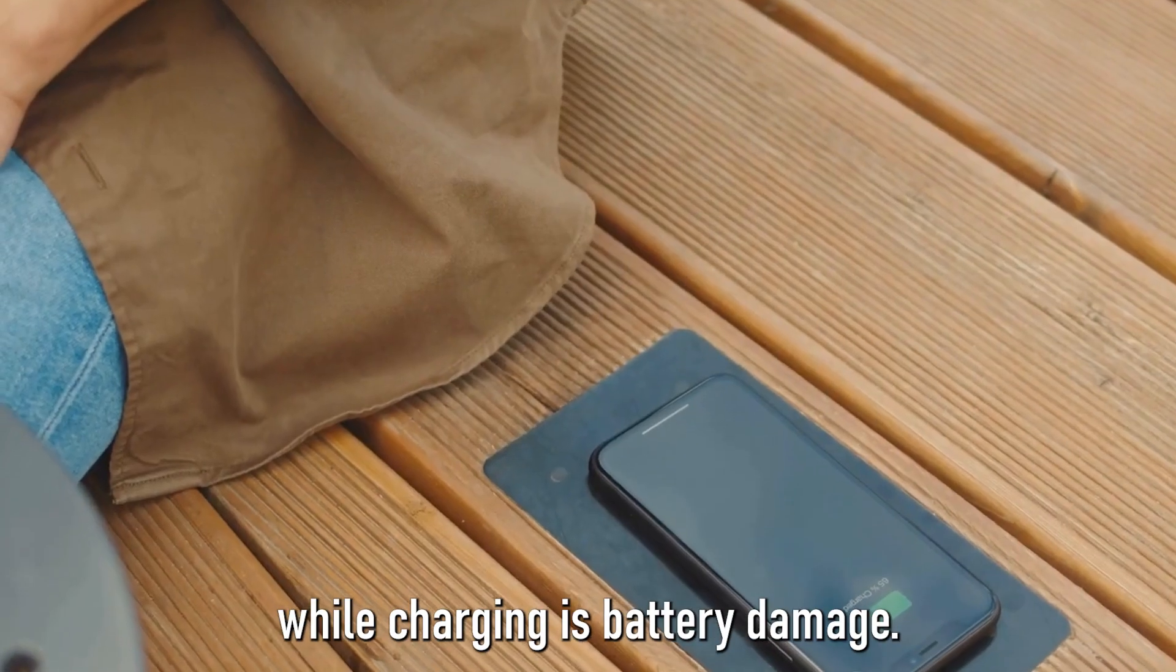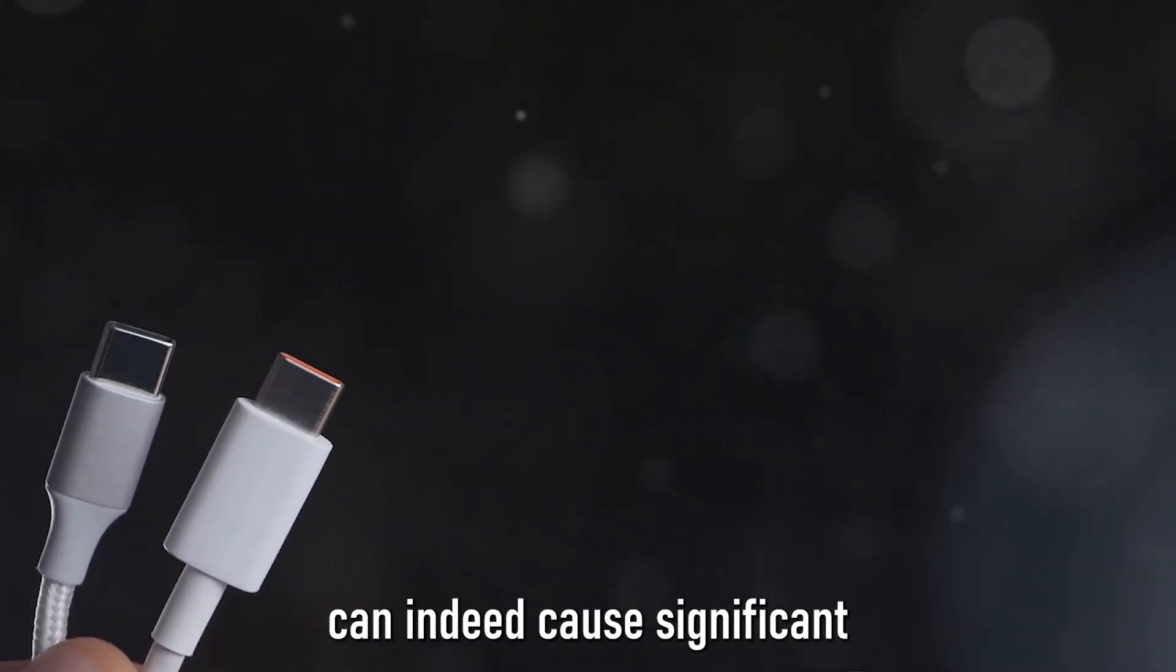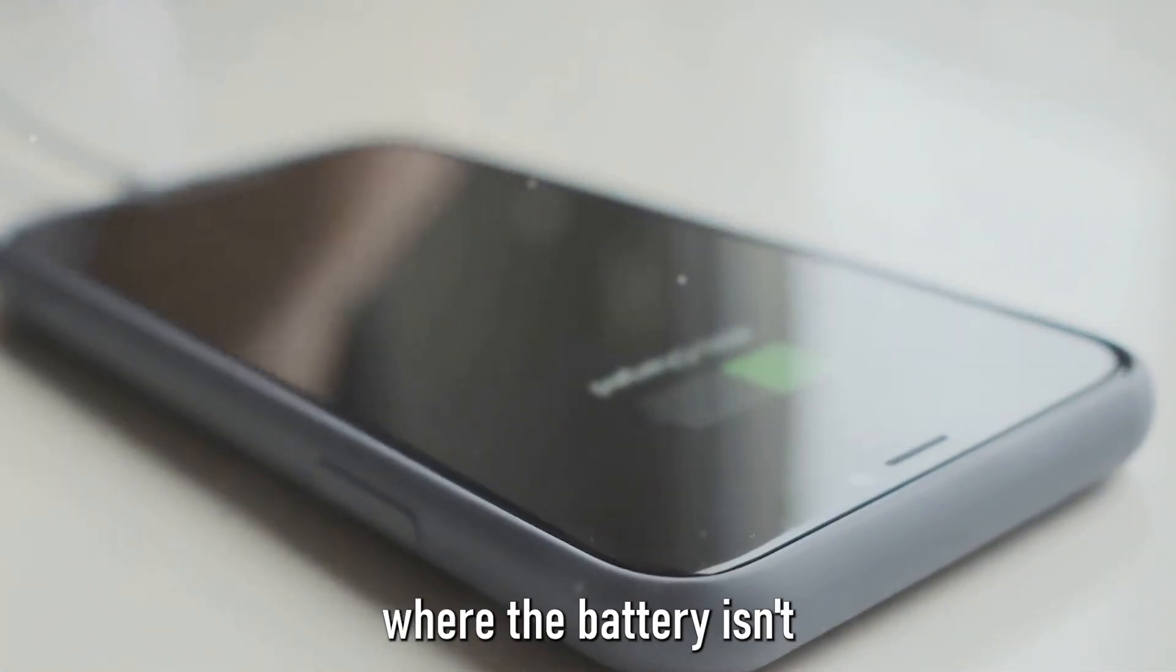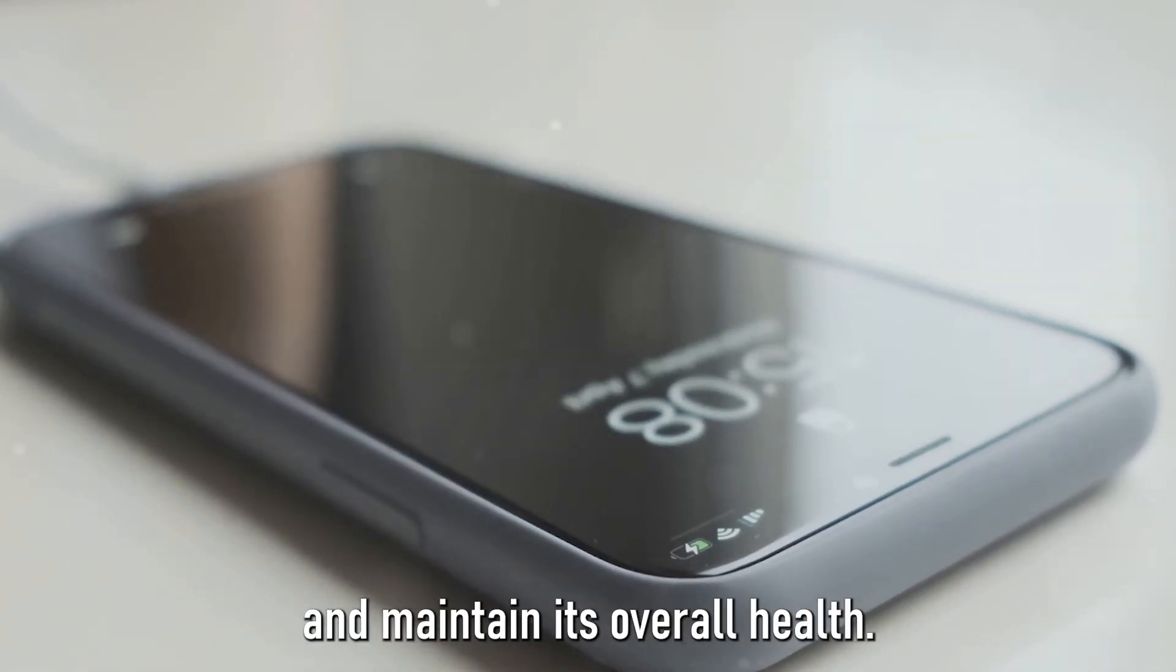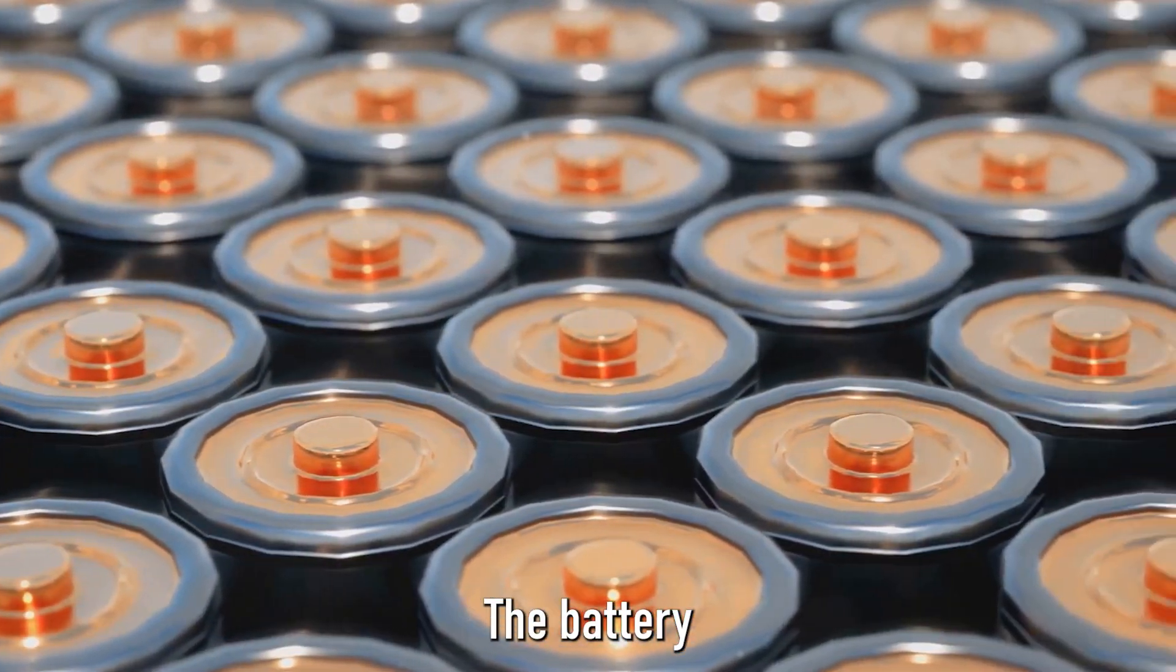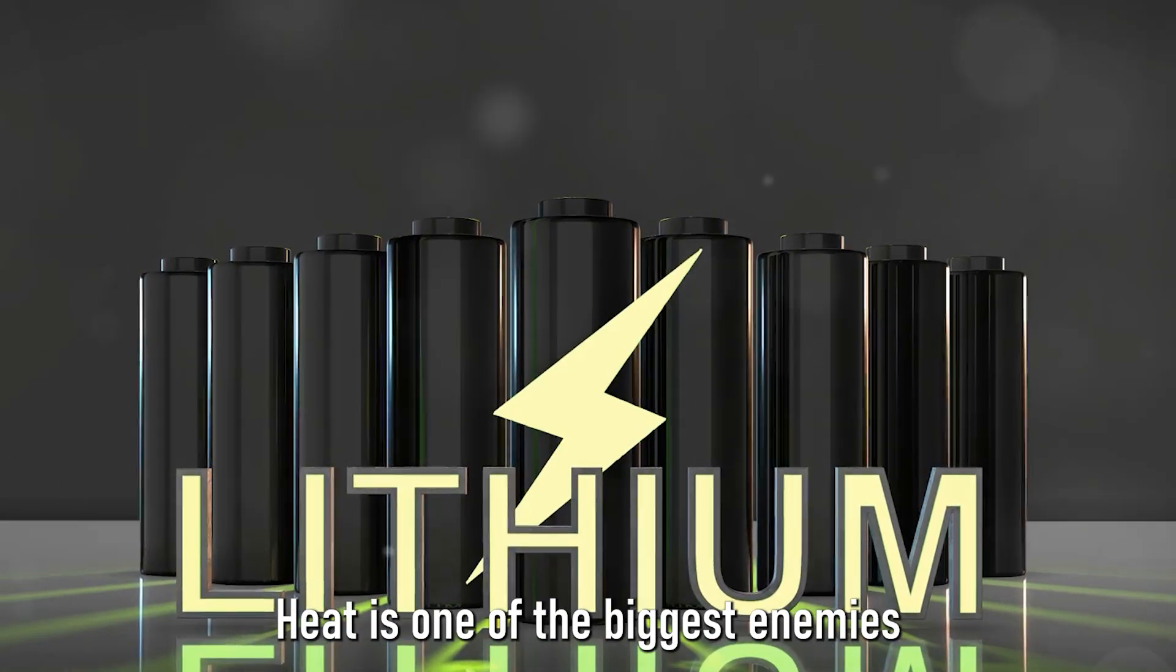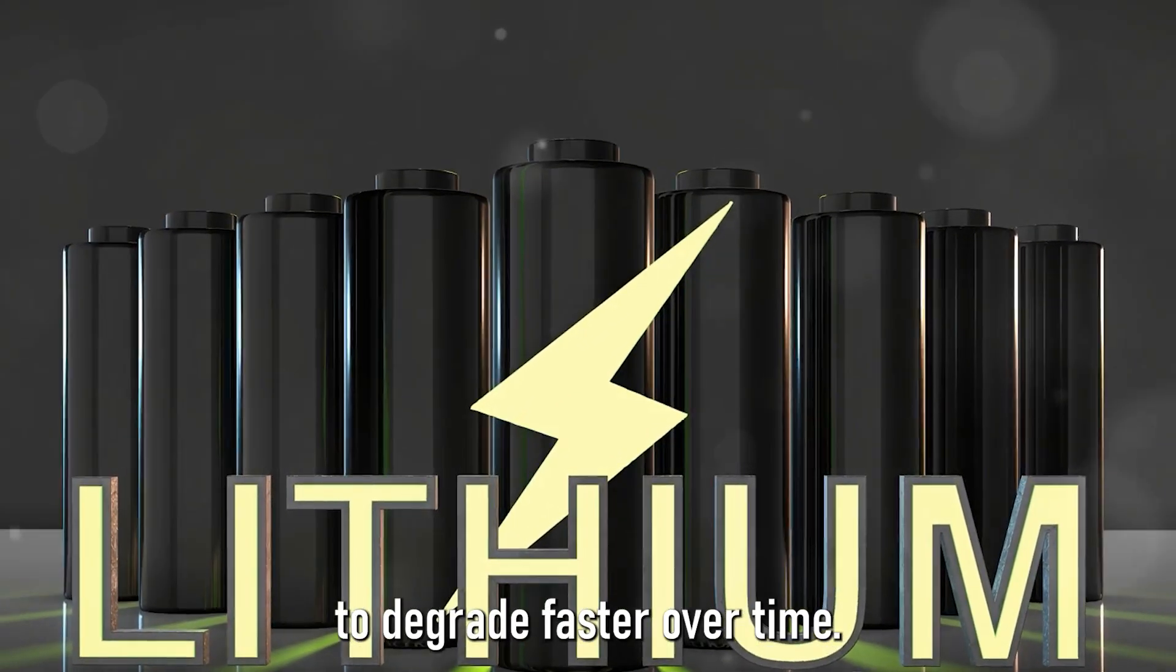Another unseen danger of using your phone while charging is battery damage. This might come as a surprise to many, but using your phone while it's being juiced up can indeed cause significant harm to your battery. But why is that? Well, it's all down to how modern lithium-ion batteries work. When your device is plugged in, it's designed to reach a state of equilibrium, where the battery isn't being used at all. This allows it to recharge efficiently and maintain its overall health. However, when you start using your phone while it's still charging, you disrupt this equilibrium. The battery now has to perform two tasks simultaneously, recharging itself and powering the device. This causes the battery to heat up, which isn't good news. Heat is one of the biggest enemies of lithium-ion batteries. It accelerates the process of aging and can cause the battery to degrade faster over time.